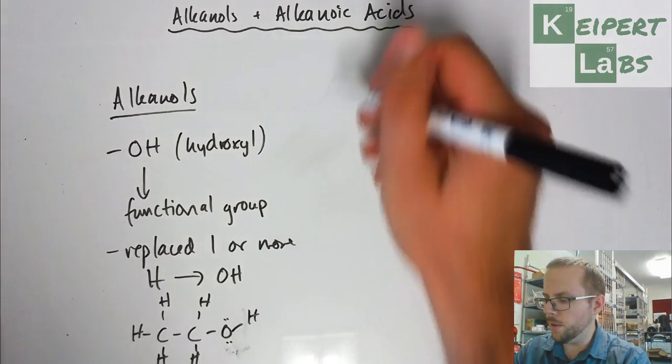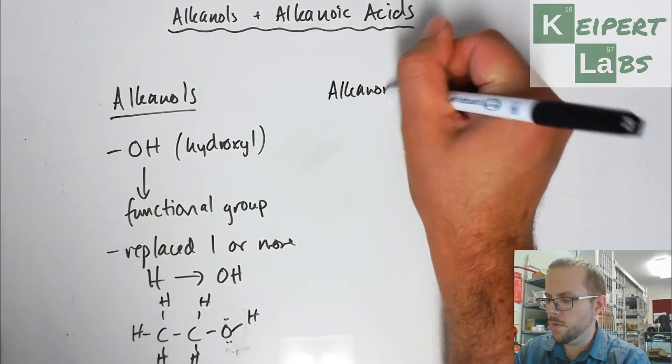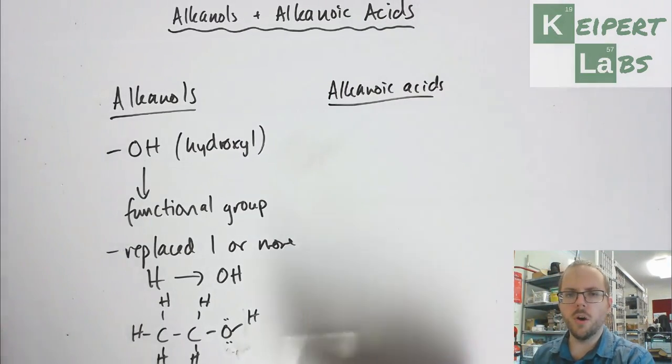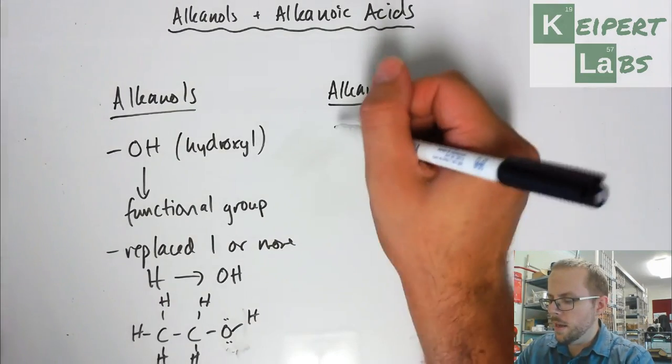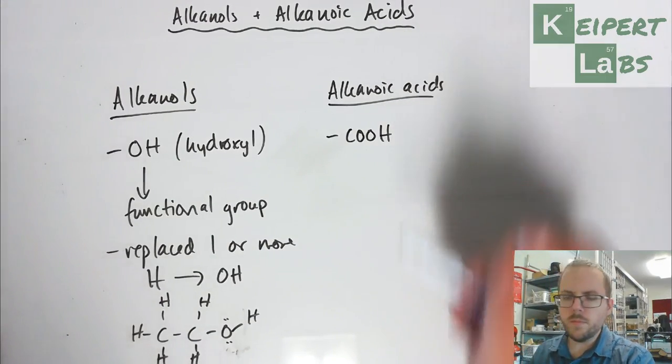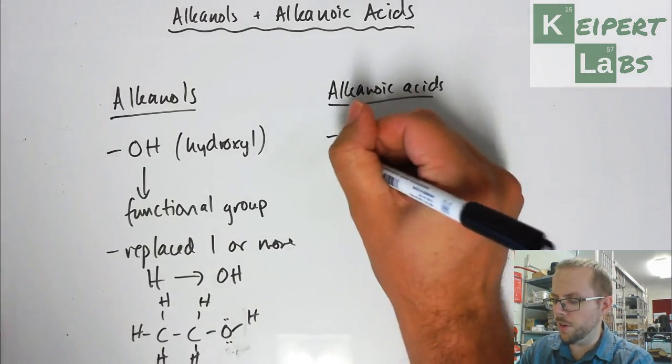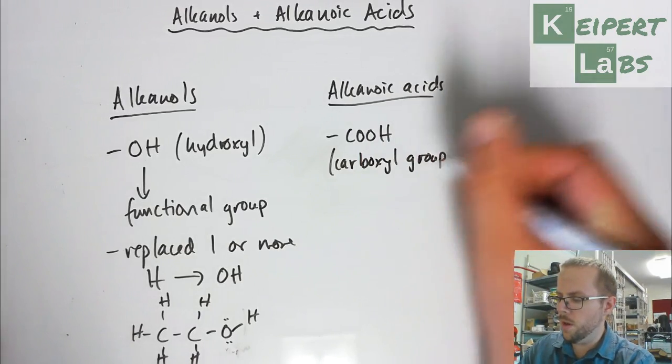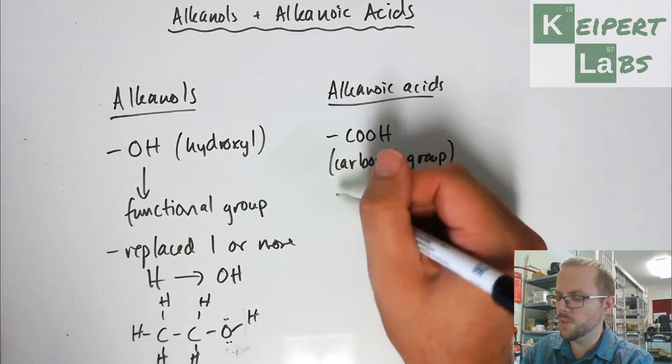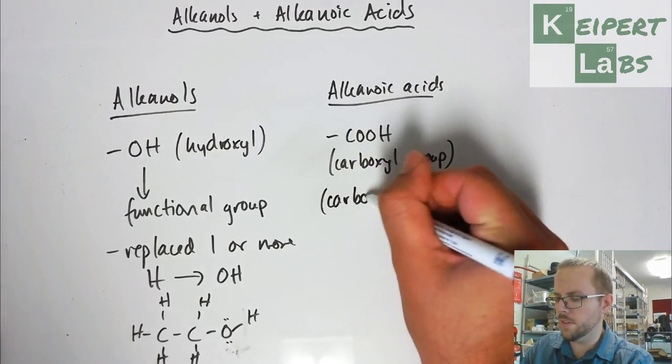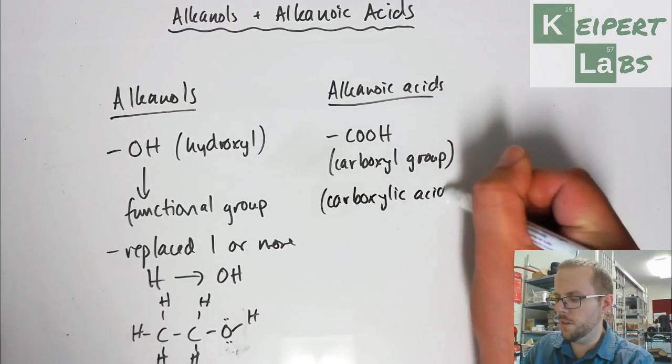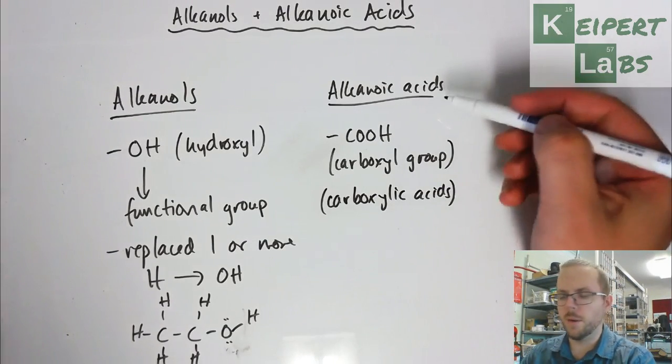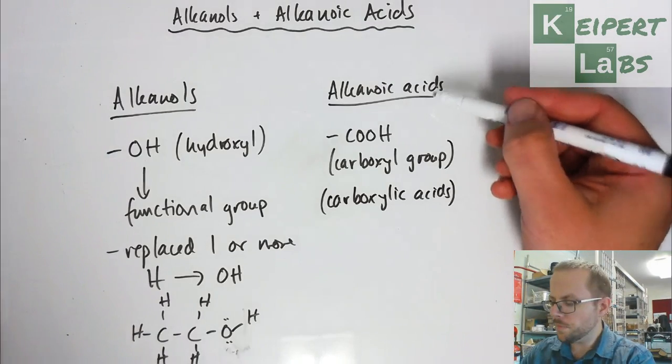Now we're going to have a quick look at alkanoic acids. This is a new family of hydrocarbons that contain a particular functional group, which is the COOH group, also known as the carboxyl group. They are often also known as carboxylic acids. This is the more old-fashioned but still long-lasting term that chemists would use to describe a compound that belongs to this family.